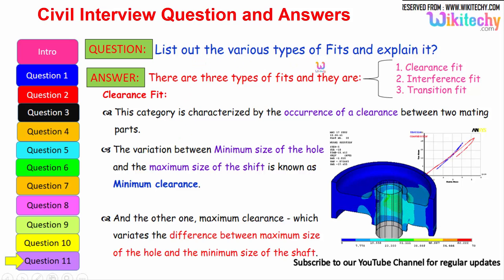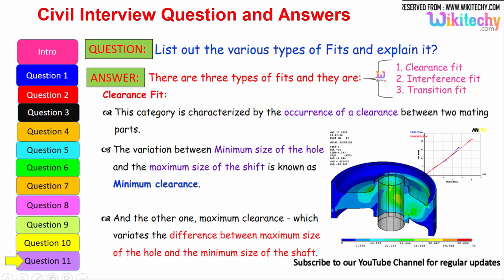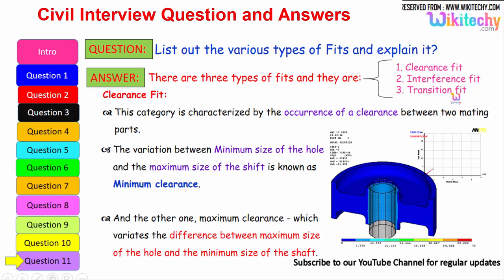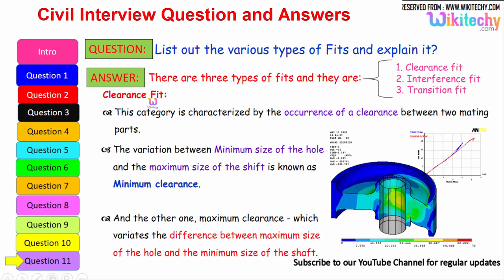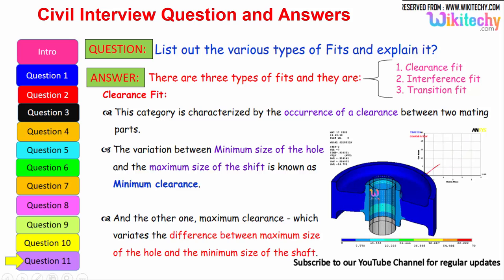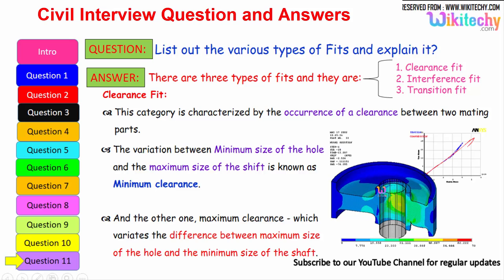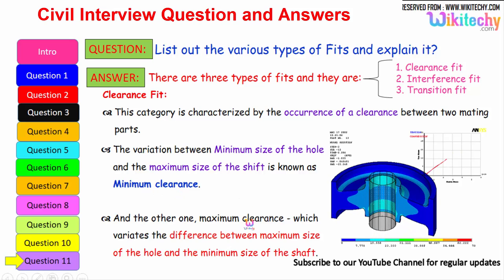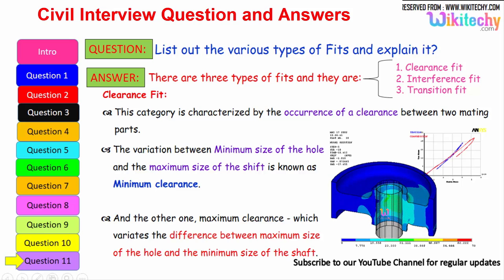Let us see the final question. List out the various types of fits and explain it. There are three types of fits available. One is clearance fit. The second one is interference fit. The third one is transition fit. This category is characterized by the occurrence of clearance fit. It is categorized by the occurrence of clearance between the two mating parts. One and two mating parts. The variation between the minimum size of the hole and the maximum size of the shaft is known as minimum clearance. Whereas maximum clearance which will have the difference between the maximum size of the hole and the minimum size of the shaft. So that is your clearance fit.